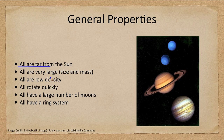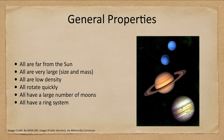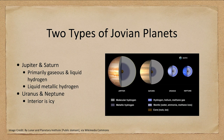So first of all, what do we know about these planets? They're all far from the Sun, they're large both in size and mass, they have low density, they rotate quickly, they have a large number of moons which we will look at in future lectures, and they also have a ring system. Here we see only Saturn with its rings, but actually each of these has its own set of rings.